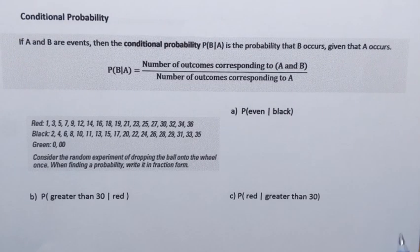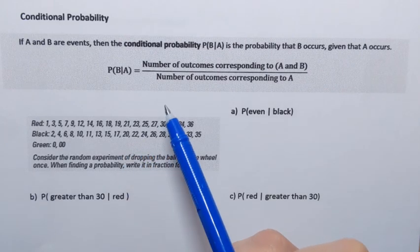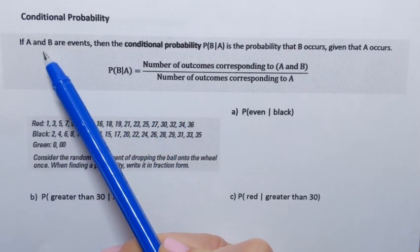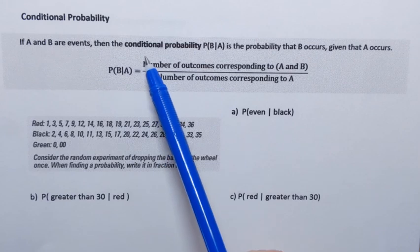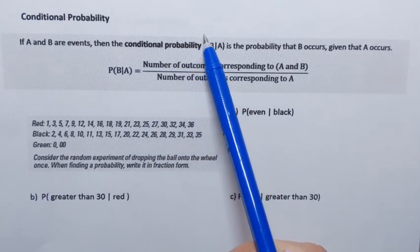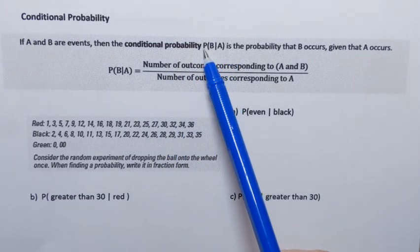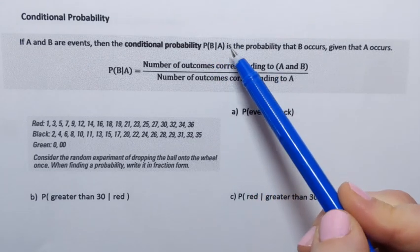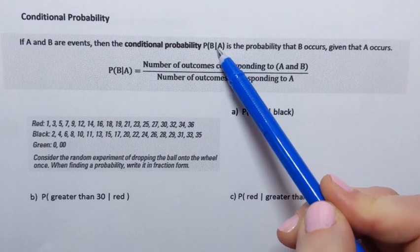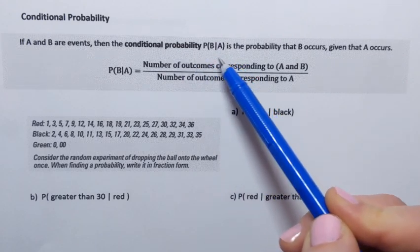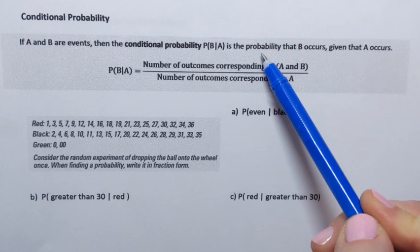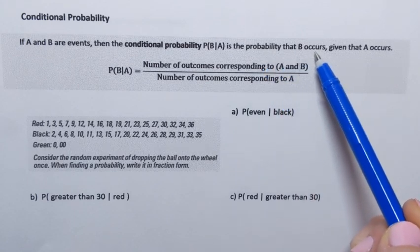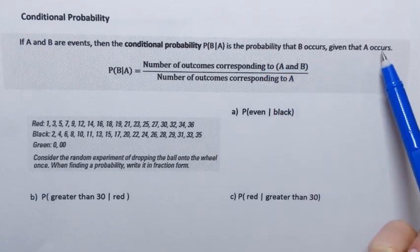In this video we are going to learn about conditional probability. The conditional probability is defined this way. If A and B are events, then the conditional probability has the following notation — P stands for probability, and we have events A and B with a vertical line between them. That vertical line is the notation for conditional probability, meaning the probability that B occurs given that A occurs.